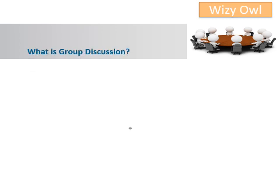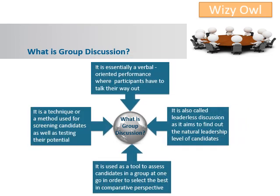So what is a group discussion? Group discussion is essentially a verbally oriented process where participants have to talk their way out. It is a technique or method used for screening candidates as well as testing their potential. It is often called a leaderless discussion as it aims to find out the natural leadership level of candidates. It is used as a tool to assess candidates in a group at one go in order to select the best in comparative perspective.